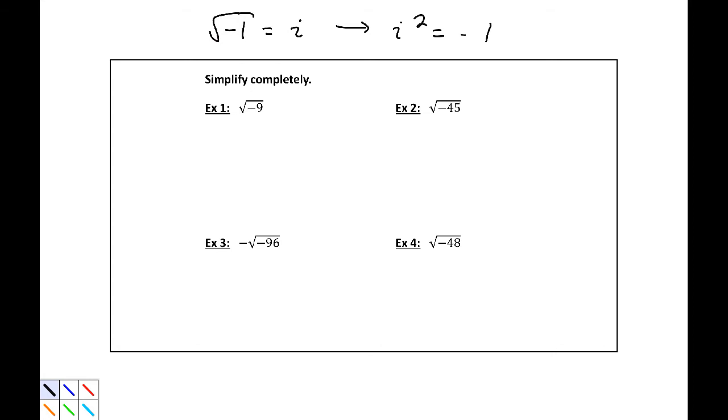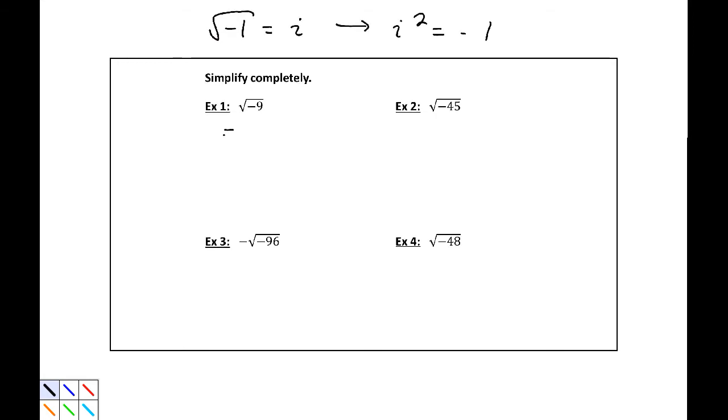As we see in example 1, we have square root of negative 9. What I want to do is write this as the square root of negative 1 times the square root of 9, similar to what we saw with simplifying square roots. The square root of 9 is 3 and the square root of negative 1 is i, so our answer is 3i.